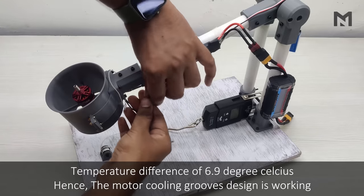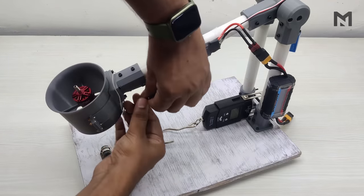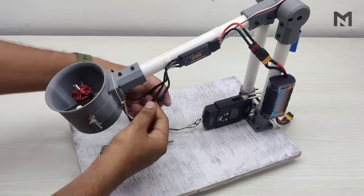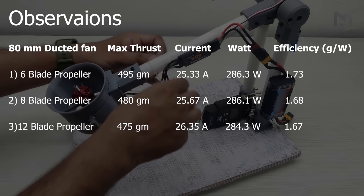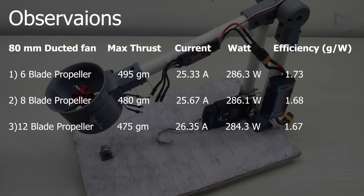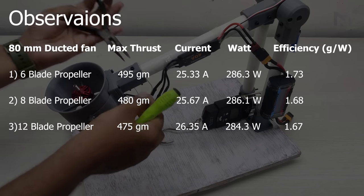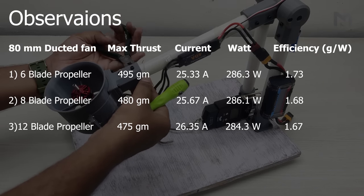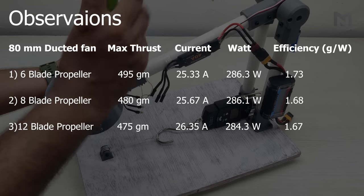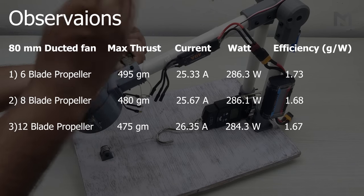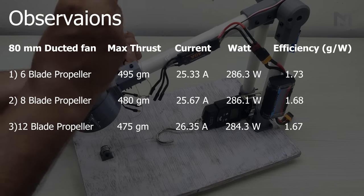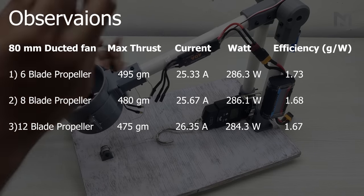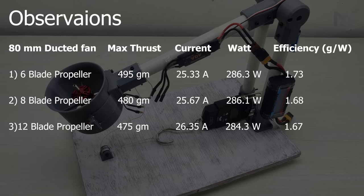The thrust test of the EDF has been completed and it's time for the observations. The six-blade propeller produces maximum thrust of 495 grams at an efficiency of 1.73, while the 12-blade propeller produces the least thrust of 475 grams at an efficiency of 1.67. On observing carefully, you'll see that by increasing the number of blades, the thrust of the motor is decreasing and the current consumption is increasing.